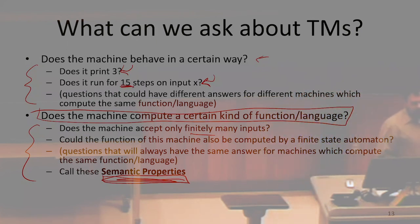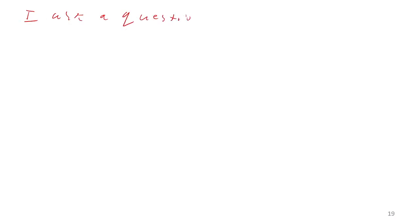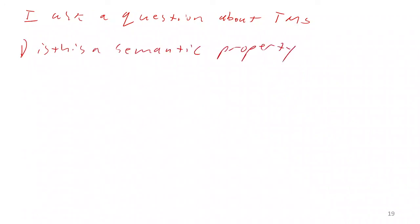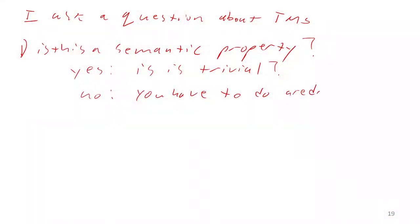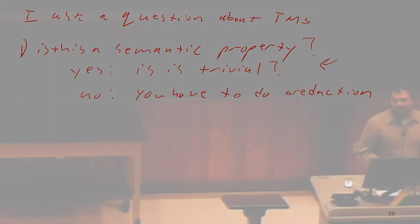Here's the decision procedure: if someone asks a question about a Turing machine, first ask — is this a semantic property? Will the answer be the same for any two Turing machines with the same language? If yes, then ask: is it trivial — does it apply to some Turing machines but not others? If it's non-trivial, it's undecidable. If it always has the same answer for every Turing machine, it's trivial and decidable. If it's not a semantic property, you have to do a reduction; Rice's Theorem doesn't apply.